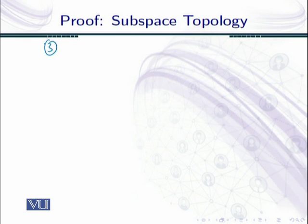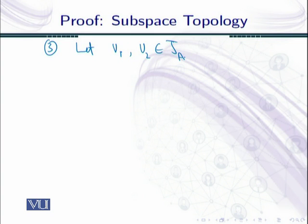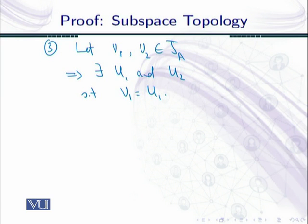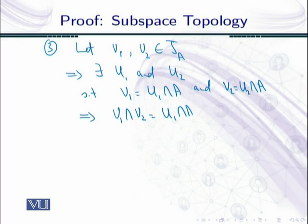Now let me prove the third condition. I have to show that τ_A is closed under finite intersection. It is sufficient to show that if I take two elements from τ_A their intersection is also in τ_A. Let V₁ and V₂ be elements of τ_A. Then I have to show that V₁∩V₂ is also an element of τ_A. This implies there exist U₁ and U₂ such that V₁ = U₁∩A and V₂ = U₂∩A.